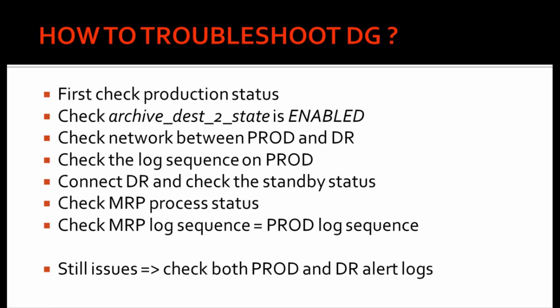Next, you need to check your archive destination state — it must be enabled. This check you need to perform on the production, because we have configured the archive destination to send archives from production to the DR server. If the archive destination state is disabled or set to defer, it definitely won't be able to send the archives from production to the DR.